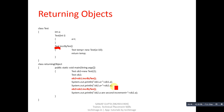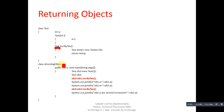Then ob2.incrementBy10 is called again and the result is stored back into ob2. Since ob2's attribute now contains 12, 12+10=22 is computed, temp holds 22, and 22 is returned and received by ob2. This time it will print 22 on the console.